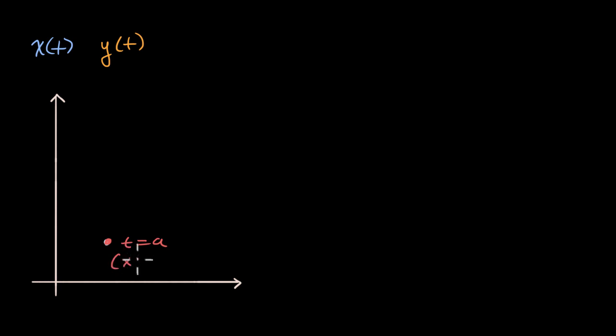So in this case, this point would be x of a, comma, y of a, that's this point. And then as we increase from t equals a to t is equal to b, so our curve might do something like this. So this is when t is equal to b.